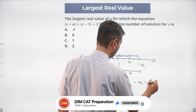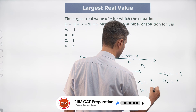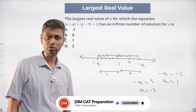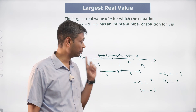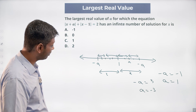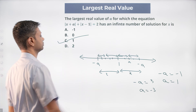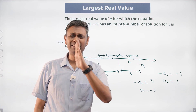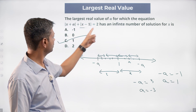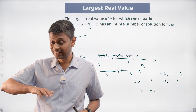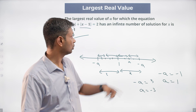So -a could be 3 (making a = -3) or -a could be -1 (making a = 1). Both are possible: x lies between 1 and 3, or x lies between -1 and 1. Therefore a is -3 or a is 1. The largest real value — -3 is not the answer, so a = 1. We're looking for 1 and -a to be 2 units apart; then x can be anywhere in between and we'll have infinite solutions.